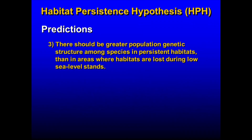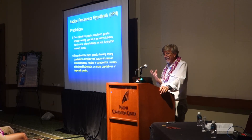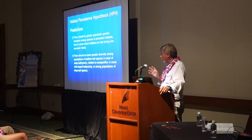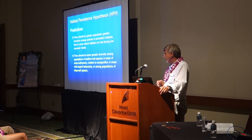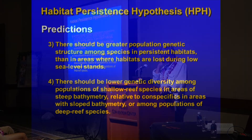The third prediction is that there should be greater population genetic structure among species in persistent habitats than in areas where habitats are lost during sea level stands. There should also be lower genetic diversity among populations of shallow reef species in areas with steep bathymetry relative to conspecifics in areas with sloped bathymetry, compared among populations of deep reef species. Within species, you should find more genetic diversity in areas where populations may have persisted a long time, as opposed to areas where steep bathymetry predicts populations are relatively recent and probably went through a colonization bottleneck.